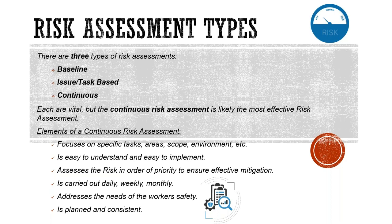The continuous risk assessment is extremely effective for managing risk on site. It focuses on the specific task, but unlike the issue and task-based risk assessment — which is done prior to work — the continuous risk assessment is performed while the work is being done. Tools like a DSTI or a job observation help us understand that what is being done matches what you have written.